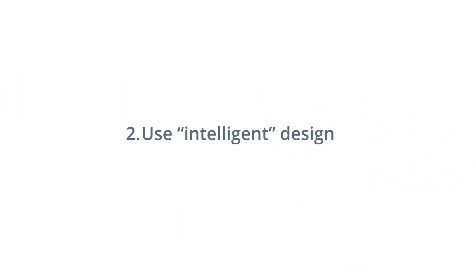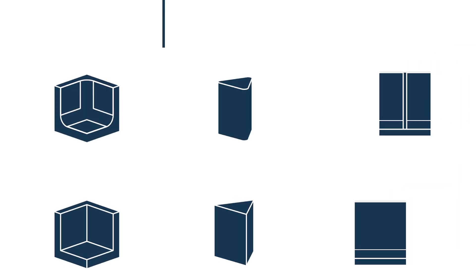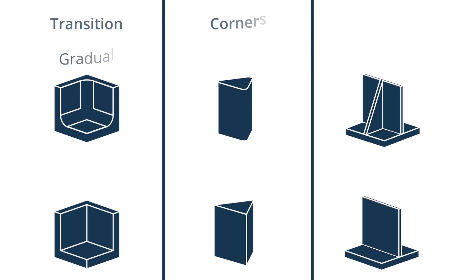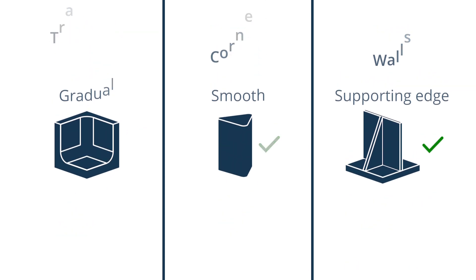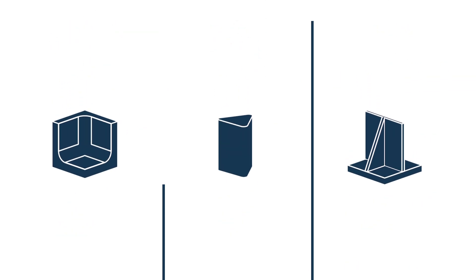2. Use intelligent design. There are a few common tips to create a well-designed 3D printed part. Use gradual transitions between adjoining surfaces. Avoid sharp corners. Avoid thin or tall unsupported walls — they might buckle or warp.